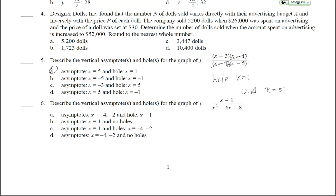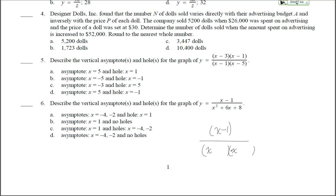Holes are removable discontinuities — we can physically remove the x minus 1 factors — whereas vertical asymptotes are non-removable. Number 6: describe vertical asymptotes and holes. Factor the denominator: x squared plus 6x plus 8 factors to x plus 4 times x plus 2. Nothing in the numerator cancels with the denominator, so there are no holes. Setting x plus 4 equal to 0 gives x equals negative 4, and x plus 2 equal to 0 gives x equals negative 2. Both are non-removable, giving vertical asymptotes at x equals negative 4 and negative 2, with no holes. Number 6 is letter D.